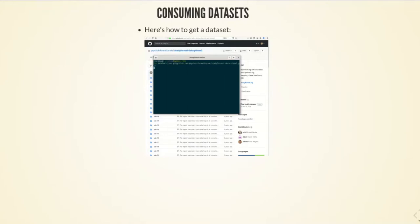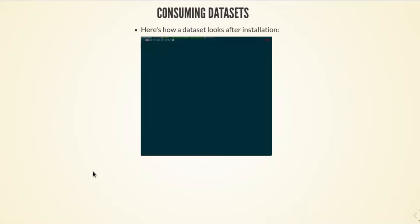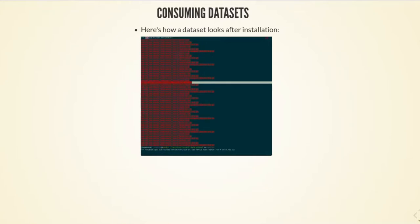This cloning — you can also do it with a git clone, by the way — is really fast, even though this study is an imaging study with dozens of gigabytes of files. If you take a look into this dataset after you have installed it — that's what we call it — you can see it contains all of the neuroimaging files you would typically expect in, for example, a BIDS-structured neuroimaging dataset.